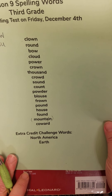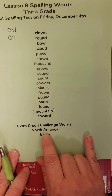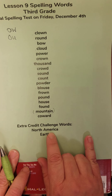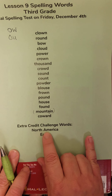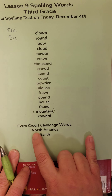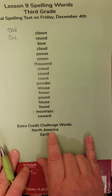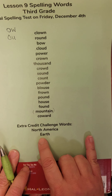Your two extra credit words we very likely have had before, but they're so important to learn how to spell. Our continent: North America, capital N, capital A — North America, two separate words. And then our planet: Earth, with a capital E.